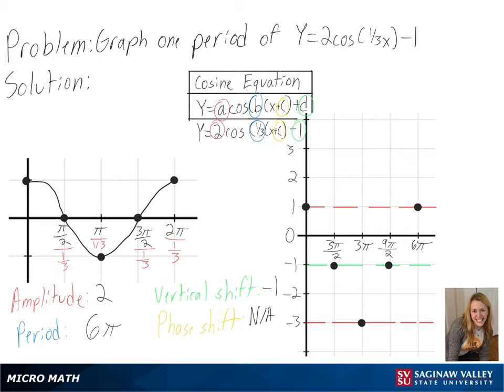And with that, we have graphed one period of y equals 2 cosine of a third x minus 1.